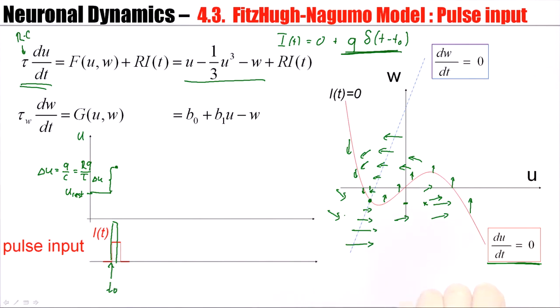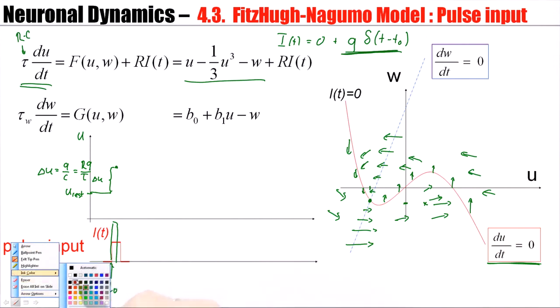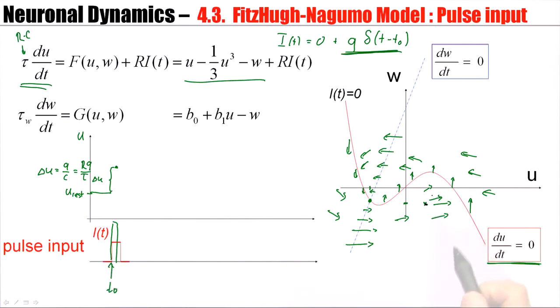Now, with this preparation, let's draw the trajectory that arises from this new initial condition. From this new initial condition, the direction of flow will be like this. We continue like this. We know that on the u-nullcline it's vertically upward.